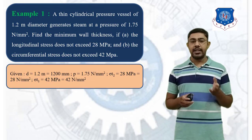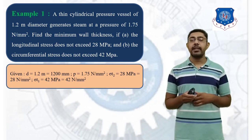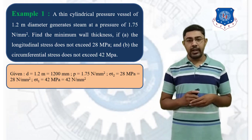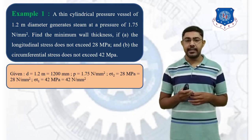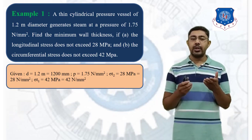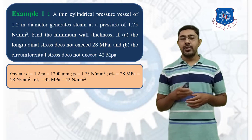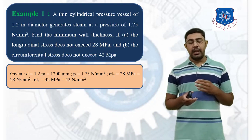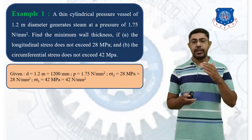Given data: D is the diameter of the pressure vessel = 1.2 meters, which converts to 1200 mm. P, the pressure intensity = 1.75 Newton per mm square. Sigma T2, the longitudinal stress = 28 MPa, i.e., 28 Newton per mm square. Sigma T1, the circumferential (hoop) stress = 42 MPa, i.e., 42 Newton per mm square. We have to calculate the thickness for two cases.